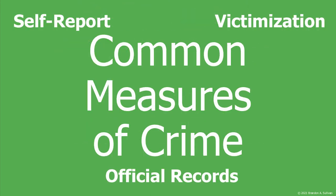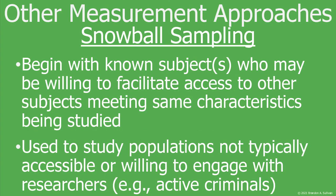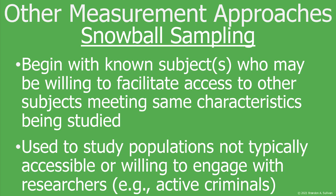That's a brief overview of the most common measures of crime. There are others as well that are useful in different circumstances, such as snowball sampling, where the researcher essentially builds a sample through social network connections — quite valuable for learning about populations that can be difficult to access, such as active criminals — or open source methods, where any available information about specific crimes is gathered and analyzed, which is very useful for learning about crimes that are difficult to measure or where relatively little information is known about them, such as product counterfeiting.